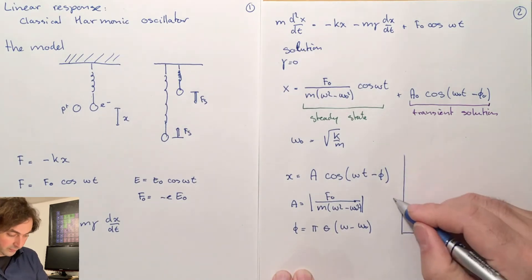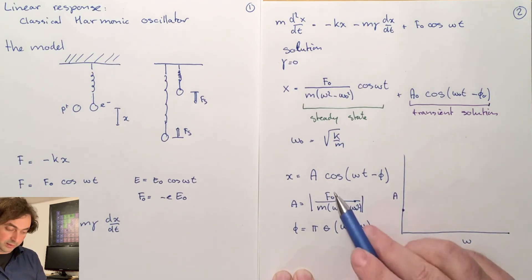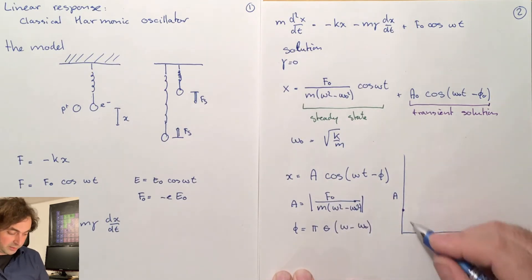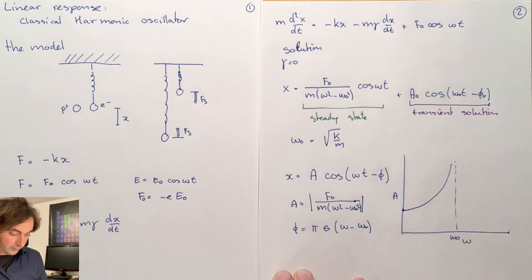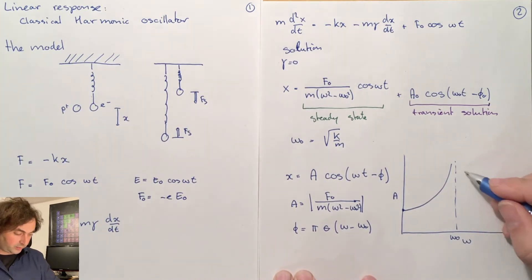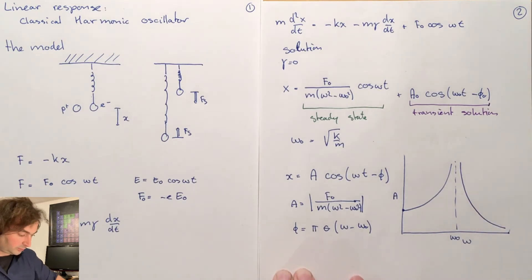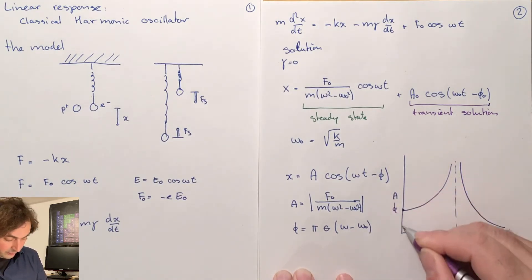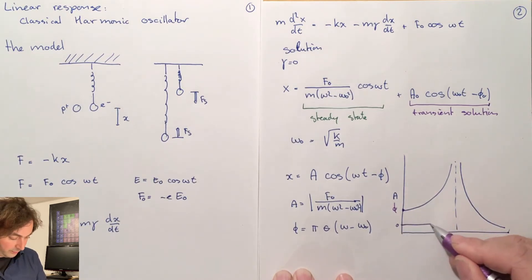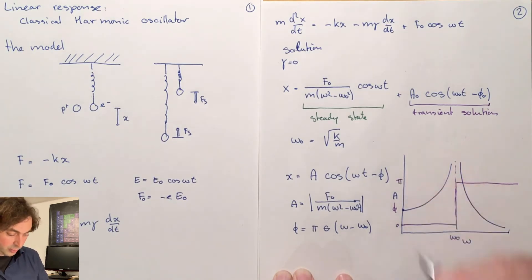If we have a look at the amplitude as a function of frequency, then at omega zero we start at f zero over m times omega zero squared, then at the resonance — the eigenfrequency — you diverge, and then on the other side you decay again. Instead of looking at the amplitude we can look at the phase, which starts at zero and at the eigenfrequency you have a jump and you jump to pi.